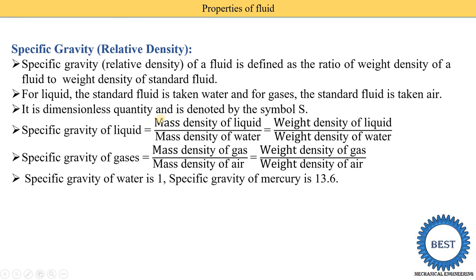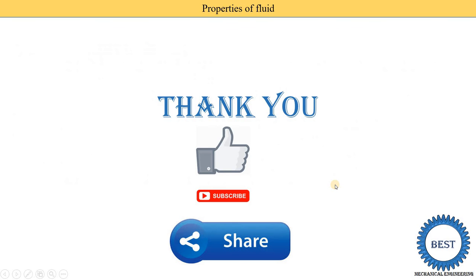The specific gravity of mercury is 13.6. To find this, specific gravity of mercury equals mass density of mercury divided by mass density of water, which is 13,600 divided by 1000, giving 13.6. This is how we understand the four properties of fluids: mass density, weight density, specific volume, and specific gravity.